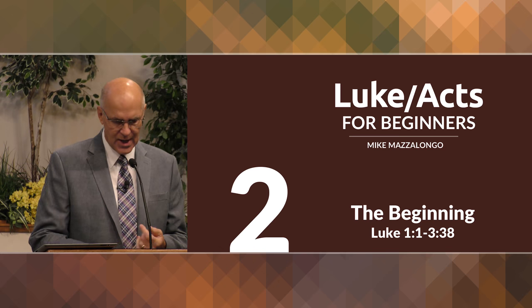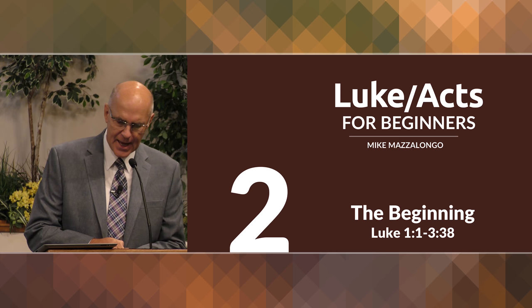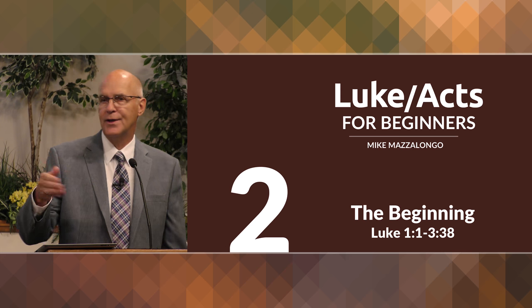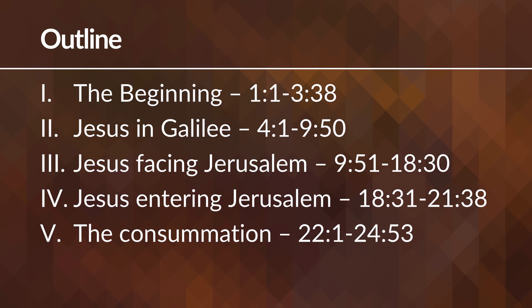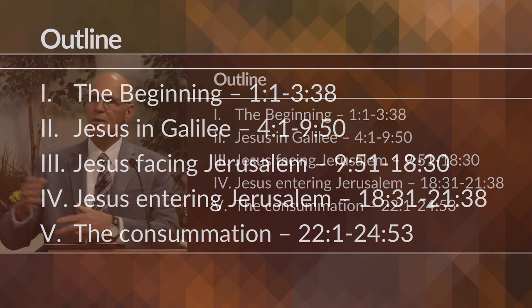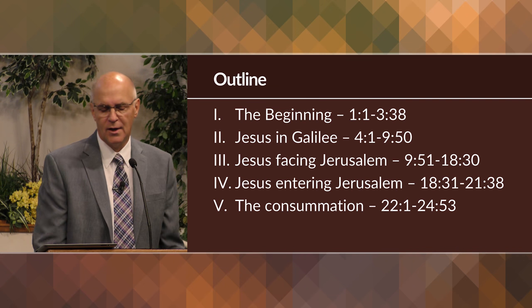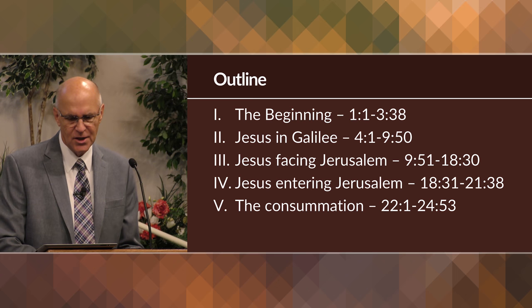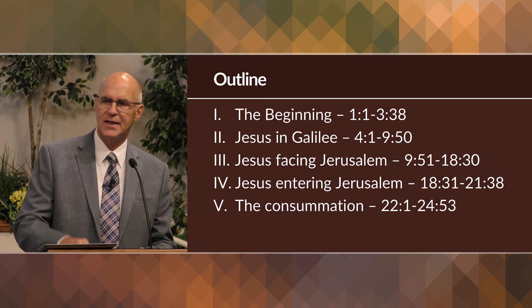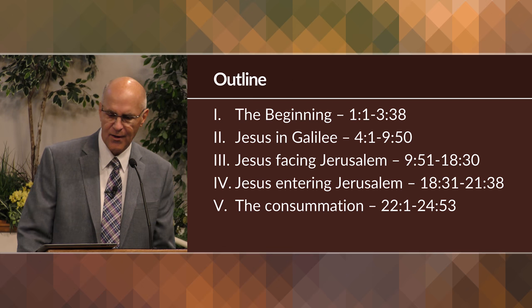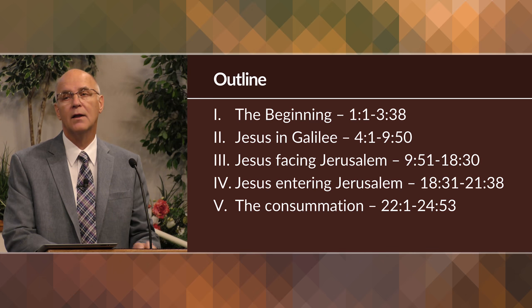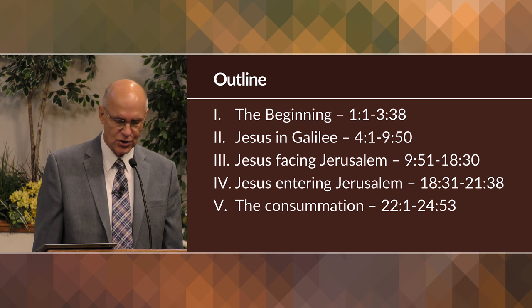In our first lesson I showed you the outline we're going to use to cover Luke's gospel this quarter. Since this book is way too long to do a line by line study, we're going to jump through it and hit the high points. Here's the outline: The Beginning, meaning the beginning of Jesus' ministry, chapters 1 to 3. Jesus in Galilee, His northern ministry, chapter 4 to 9. Jesus facing Jerusalem, meaning on His way to Jerusalem, chapters 9 to 18. Jesus entering Jerusalem, His ministry and interaction with people, chapters 18 to 21. And then the consummation, meaning His trial, His death, His resurrection, chapter 22 to 24.